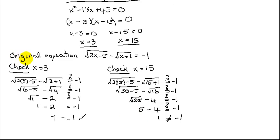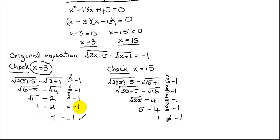Plugging x equals 3 into the original equation: the square root of 2 times 3 minus 5, minus the square root of 3 plus 1, equals negative 1? The square root of 1 is 1, and the square root of 4 is 2, so 1 minus 2 equals negative 1. Yes, that is a true statement — negative 1 equals negative 1. Therefore, x equals 3 is a solution.